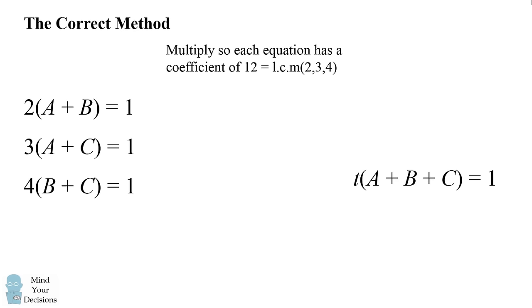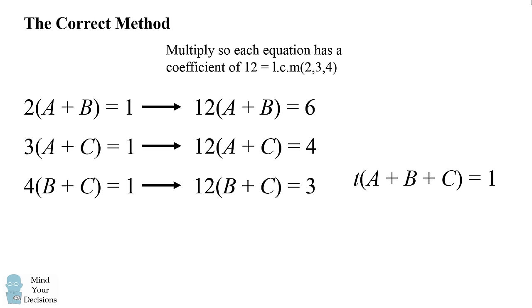We are going to multiply each equation so that there is a leading coefficient of 12, which is the lowest common multiple of 2, 3, and 4. So the first equation will multiply by 6. This will get 12 times the quantity A plus B to be equal to 6. The second equation will multiply by 4, and the third equation will multiply by 3.